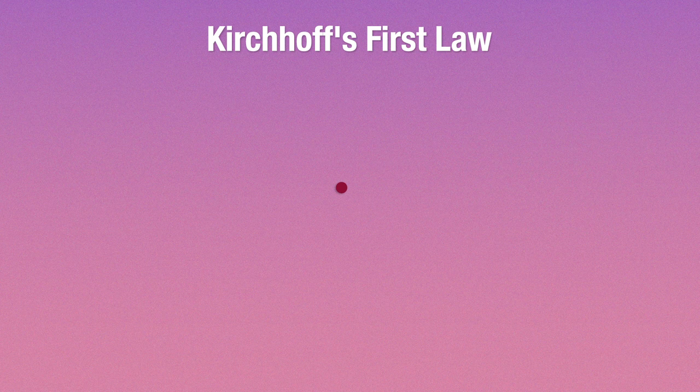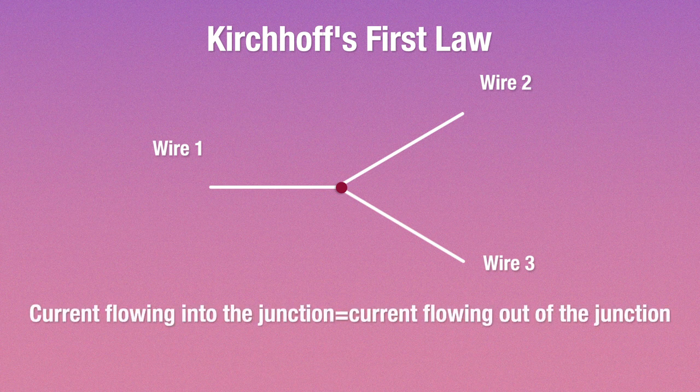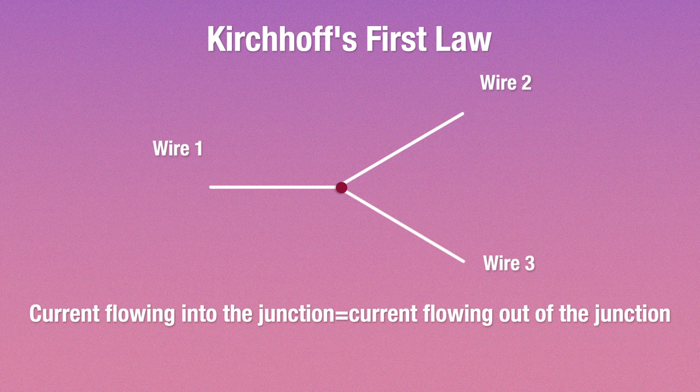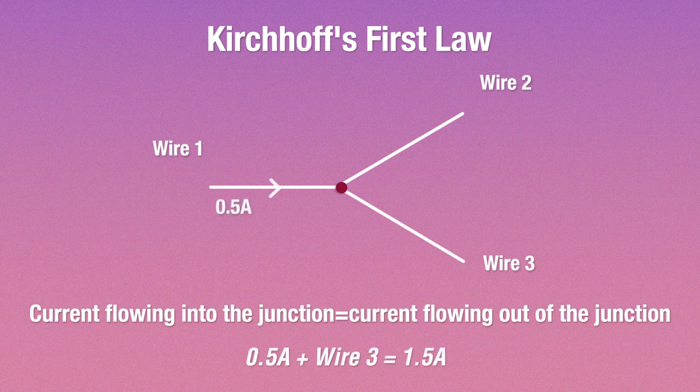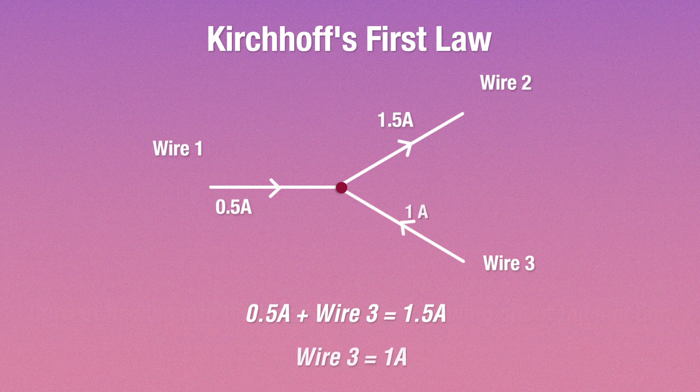Let's imagine you have a junction in a circuit where multiple wires are meeting. Now according to this law, the total current leaving the junction is equal to the total current entering the junction. So if we have a junction with three wires and you know that the current in wire one and wire two is 0.5 and 1.5 amperes respectively, Kirchhoff's first law lets us determine the current in wire three with this information alone. In this case, it's 1 amperes.